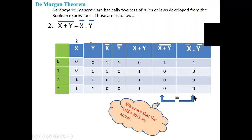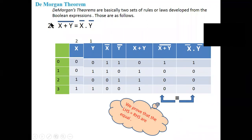Check whether x plus y whole bar equals x bar dot y bar. The results are the same: 1,0,0,0. So of course they are equal. So we prove De Morgan's second theorem by using the truth table.